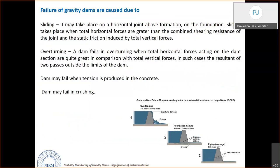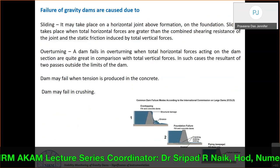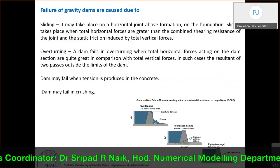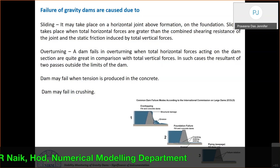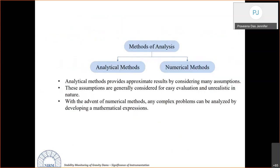Gravity dam failure modes include sliding — when total horizontal forces exceed combined shear resistance and static friction from vertical forces — overturning — when horizontal forces are disproportionately greater than vertical forces — as well as failure in tension and crushing. Analysis methods include analytic methods (approximate, assumption-based, easy to evaluate) and numerical methods (complex, realistic).